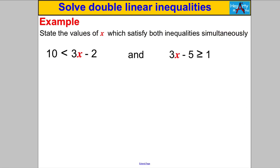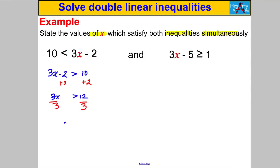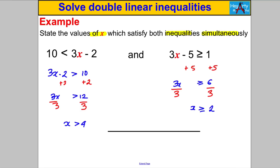Let's try another one. Again we need values of X satisfying both inequalities simultaneously. Solve the first: 3x subtract 2 is bigger than 10. Add 2: 3x > 12. Divide by 3: X is strictly bigger than 4. Solve the second: 3x subtract 5 is bigger than or equal to 1. Add 5: 3x ≥ 6. Divide by 3: X ≥ 2.